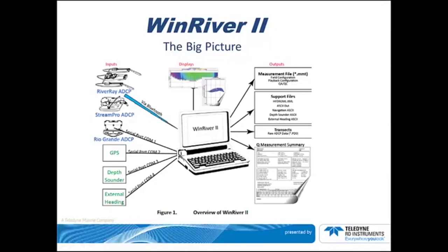Further down on the left side is a GPS. The GPS provides a means to map your track across the river and can also be used should there be a moving bed condition. The GPS can be connected directly to Wind River 2 as shown in the diagram. A depth sounder is an option for situations with high sediment concentration levels or a soft bottom. As of Fall 2013, the RiverRay will have a vertical beam that can be used in lieu of the depth sounder.